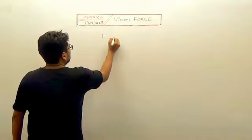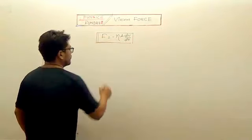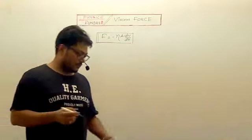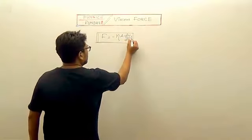F is equal to minus eta A dv by dr or dh, where A is the area of contact and dv by dr is the velocity gradient.